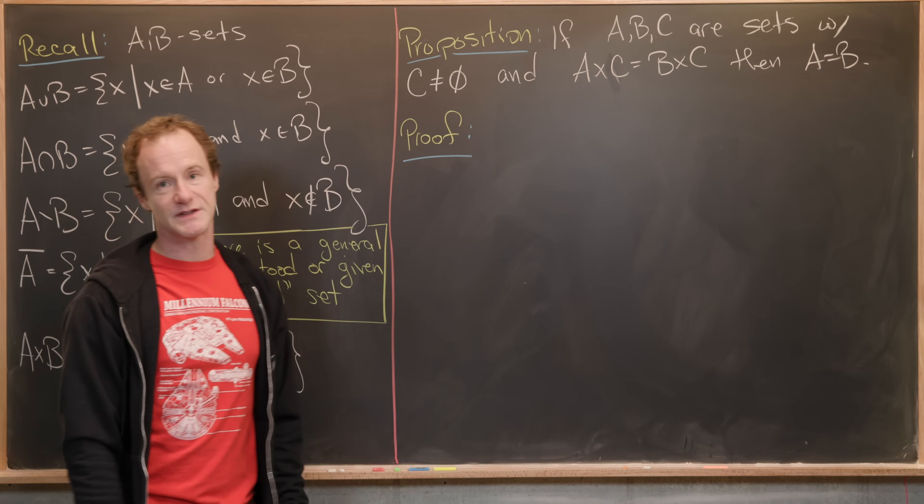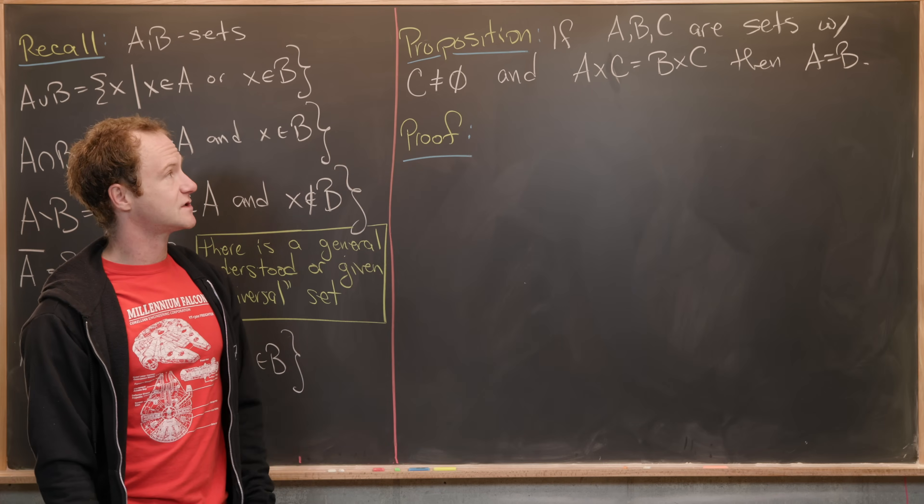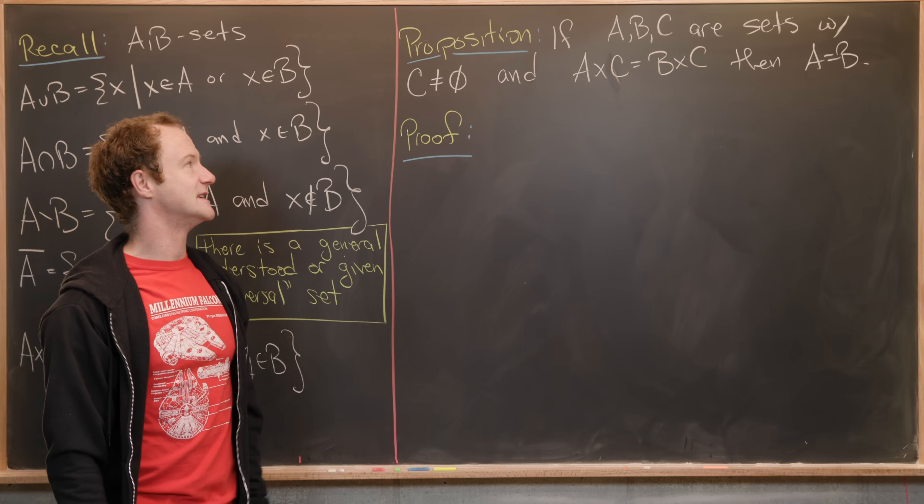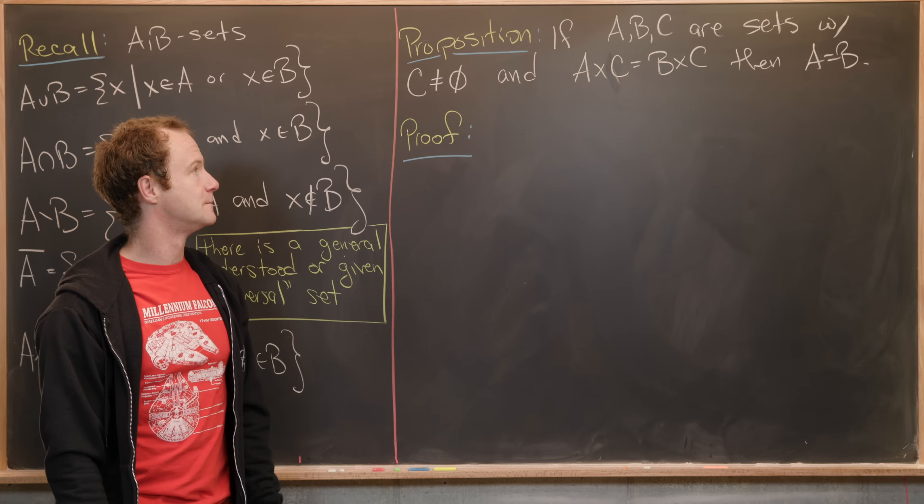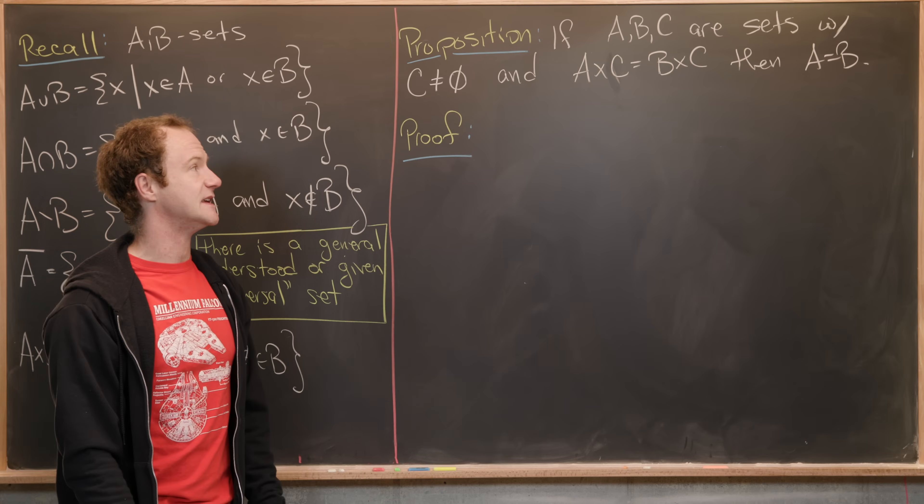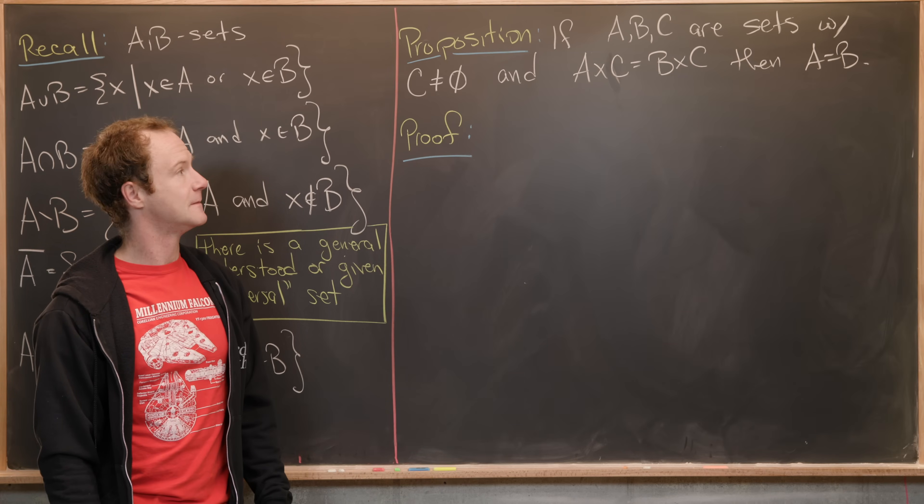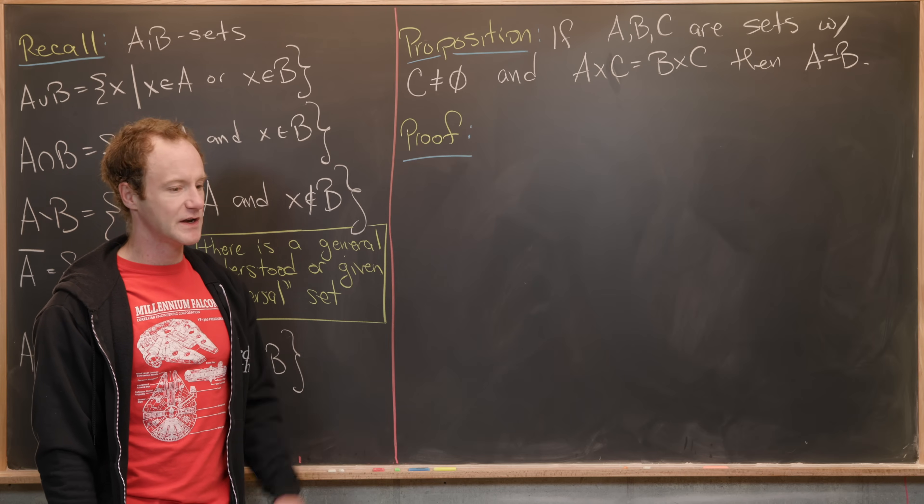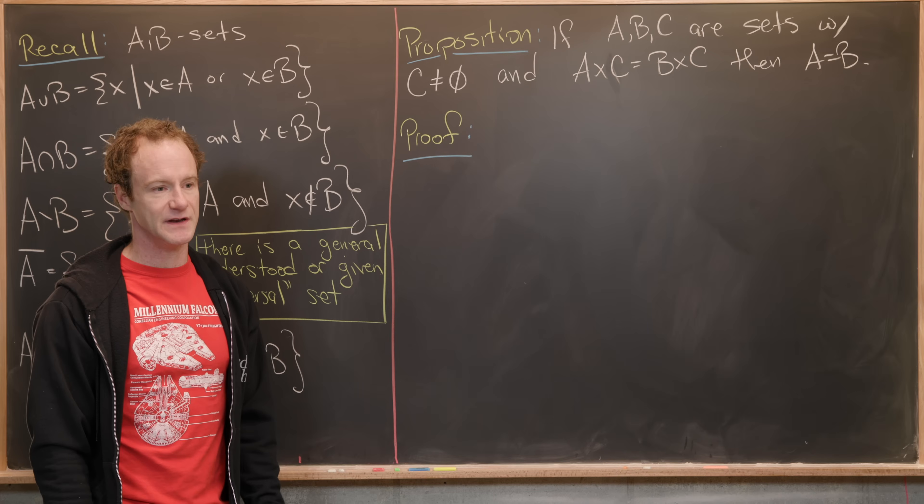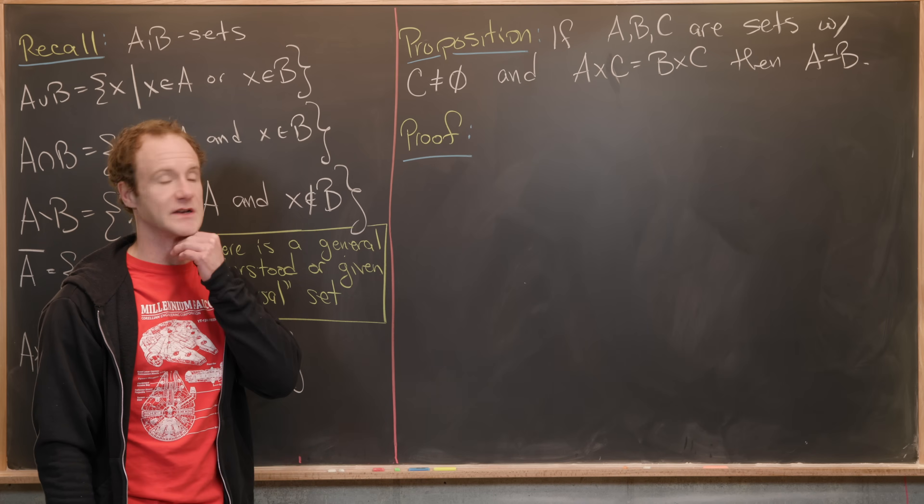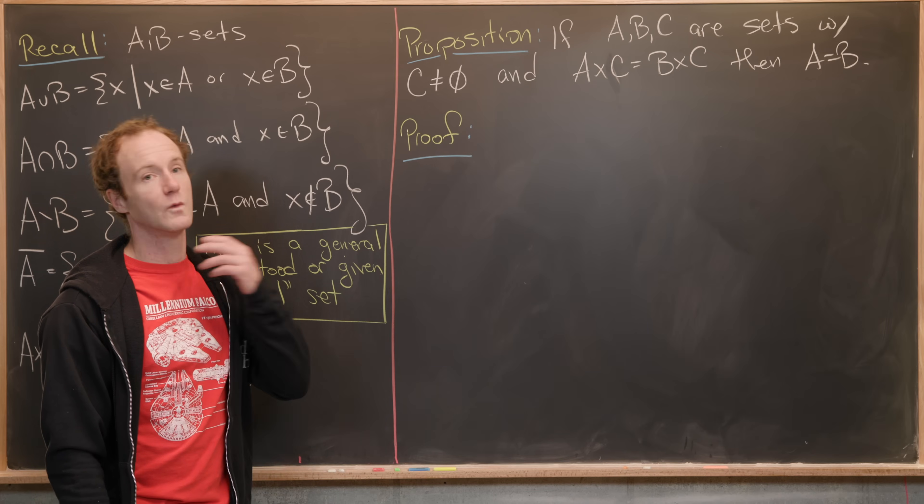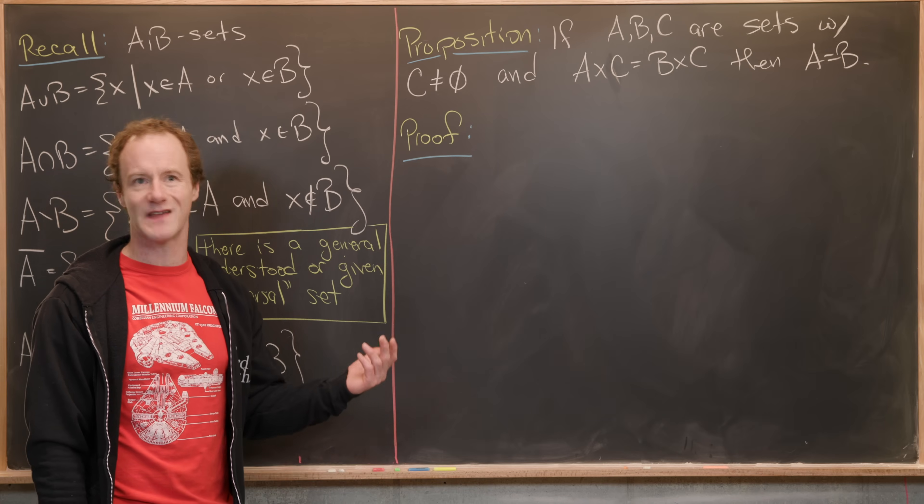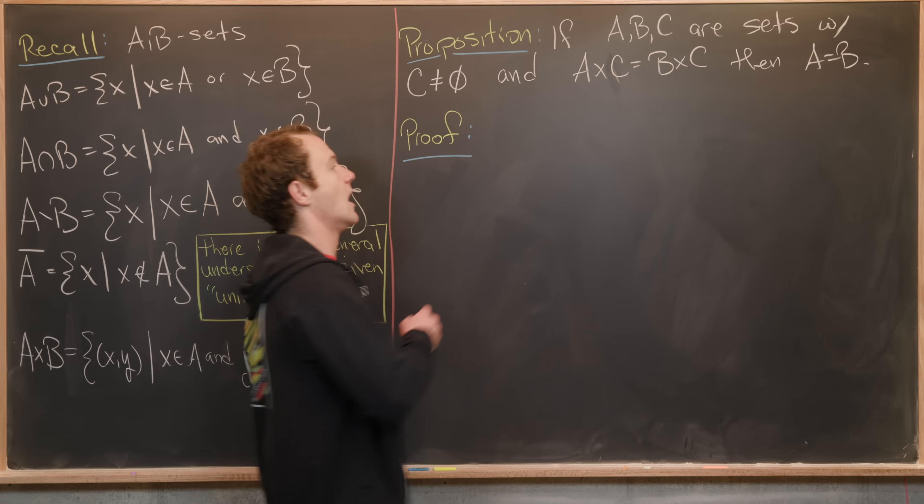So our first proposition goes like this. Let's say A, B, and C are sets. C is not the empty set, and A cross C is equal to B cross C. Then we want to show that A is equal to B. We're going to do this using the techniques from the last video, that is doing double inclusion. Although we'll see that one of the inclusions is very similar to the other one, so I'll leave that one as an exercise.